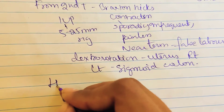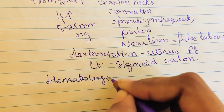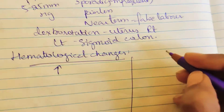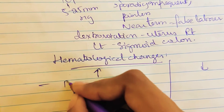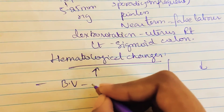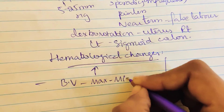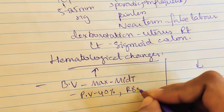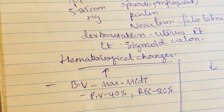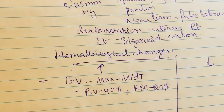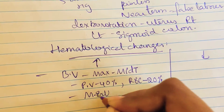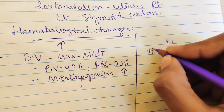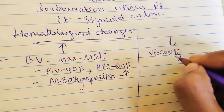Now coming to hematological changes during pregnancy. Blood volume increases, with maximum increase in the mid trimester. Plasma volume increases by 40 percent, RBC volume increases by 20 percent. Erythrocyte, reticulocyte, and maternal erythropoietin will also increase.